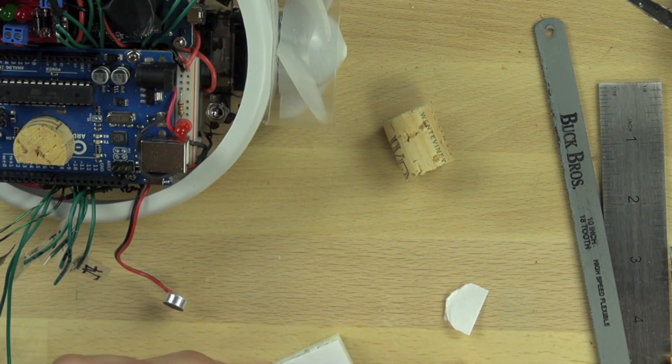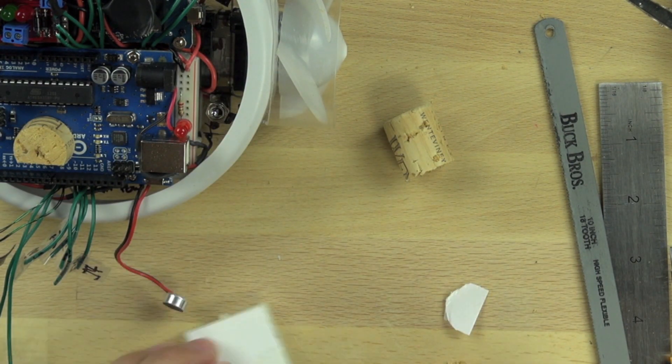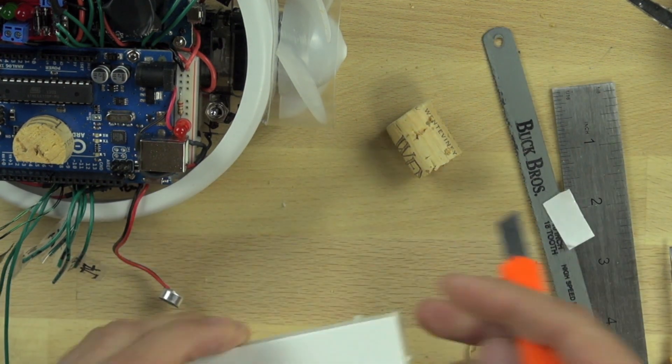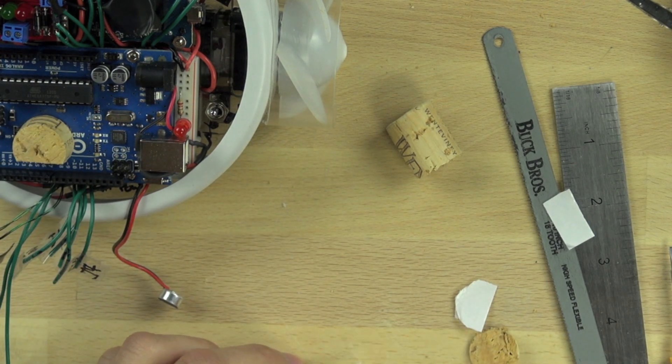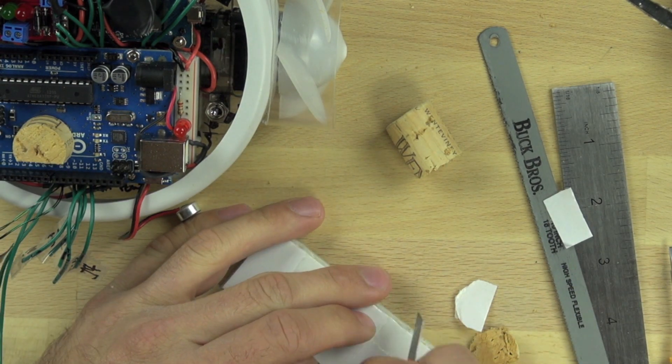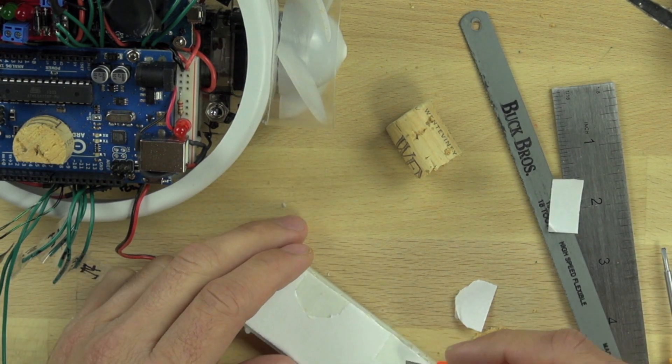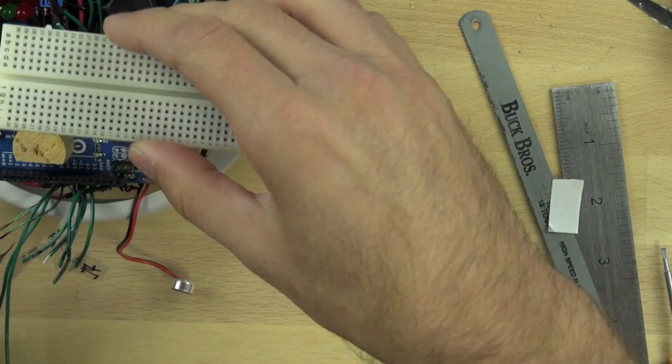We need to remove that paper coating to expose the double stick tape and stick the breadboard down. We're only removing it in the sections where it's going to touch the cork, the USB connector, and the power adapter connector.